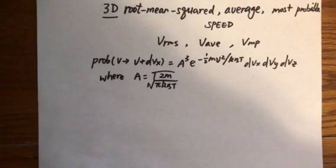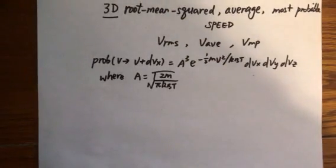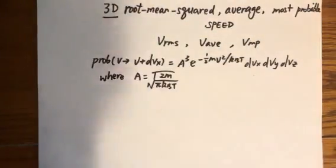We learned before in a different video that the probability of finding a particle traveling in a three-dimensional space at a speed between V and V plus dV is equal to a normalization factor times the Gaussian function of V times dVx, dVy, and dVz, where A is equal to the square root of 2m over pi kbT.